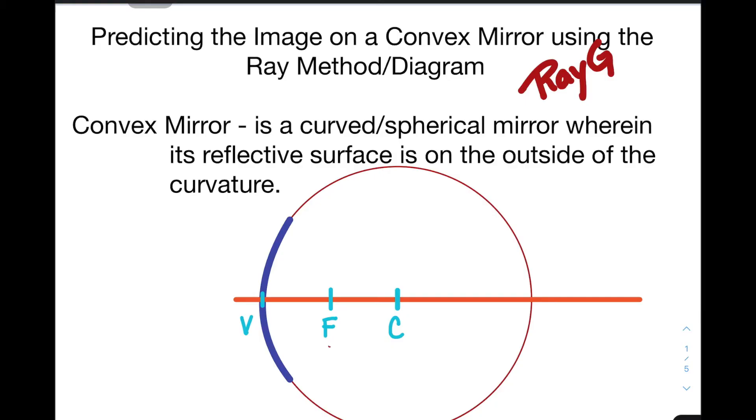But before that, let us know what a convex mirror is. It is a curved or spherical mirror wherein its reflective surface is on the outside of the curvature or on the bulging part of the mirror. Therefore, we are going to place the object on this side of this diagram. Now, as you notice, the diagram is illustrated similarly to the concave mirror wherein the arc of the mirror is a part of a greater circle.